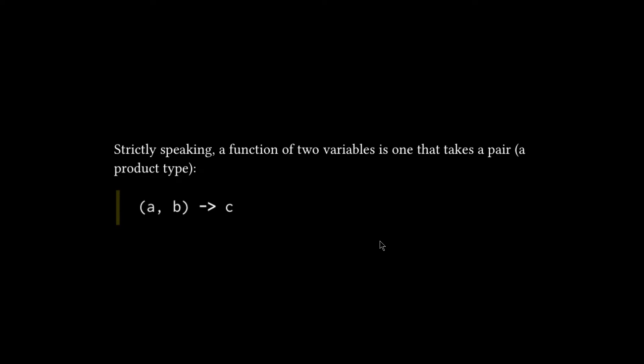The text then goes on to say, strictly speaking, a function of two variables is one that takes a pair, a product type. So as I mentioned before, a lot of folks I tell to think of a -> b -> c as a function that takes two arguments.